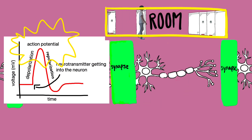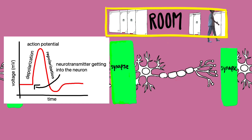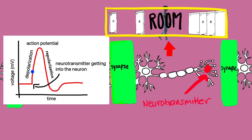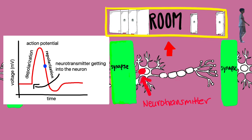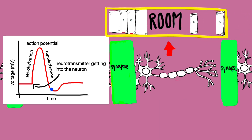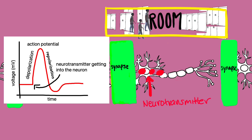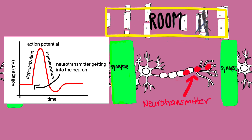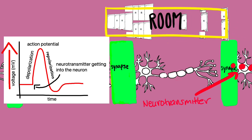Think of action potentials as a person going through a room that resembles a neuron with doors on both sides. When a person enters the room, the room depolarizes, and when a person leaves, the room repolarizes. If more people were to enter the room, it would require more doors, which cause higher action potentials.